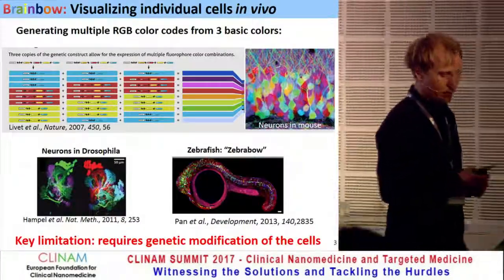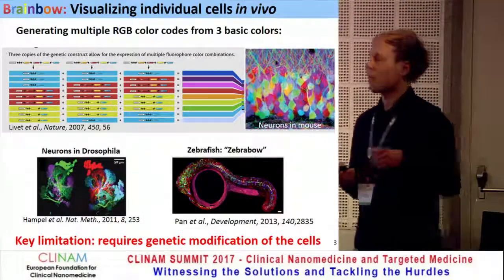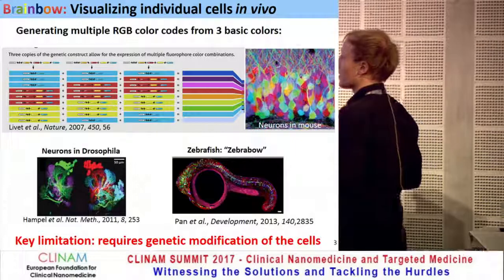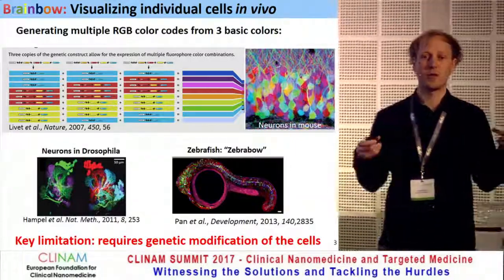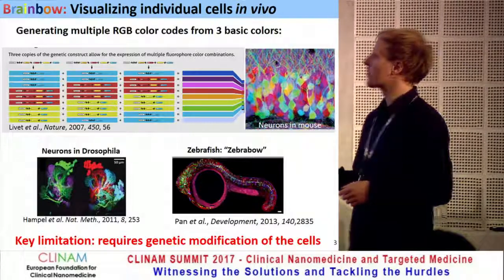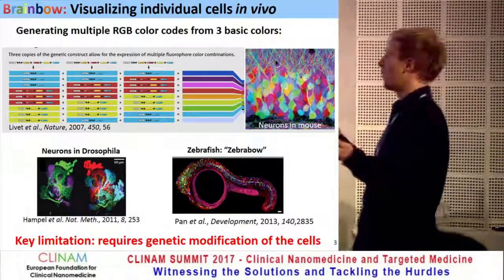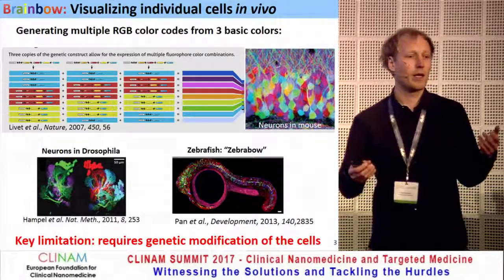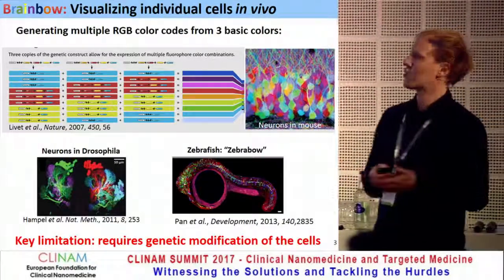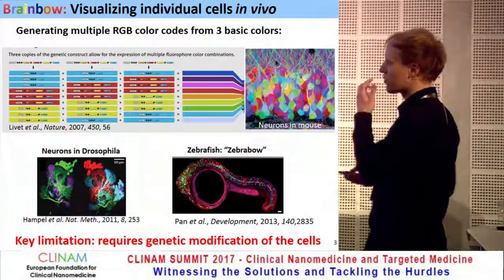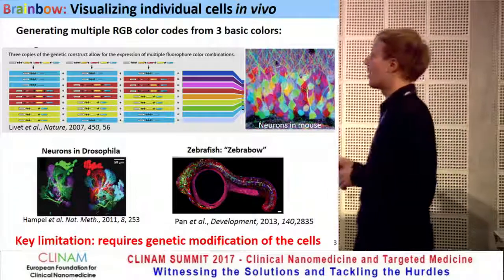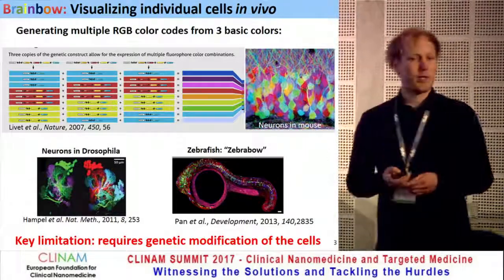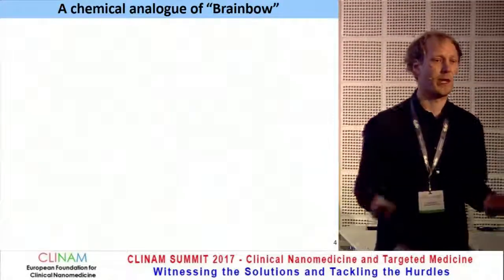A very nice proposition was made by the concept named Brainbow. They used only three basic colors in the form of three fluorescent proteins, with different expression patterns in different cells to get an RGB color coding. For example, a cell expressing only blue would give a blue cell, cells expressing only red would give a red cell, and different proportions in between would give different shades of magenta. This was applied to distinguish individual neurons in mouse brain, drosophila, and zebrafish. But one of the limitations is that it requires genetic modification. So we were thinking, how can we do something like a chemical analog of this Brainbow?